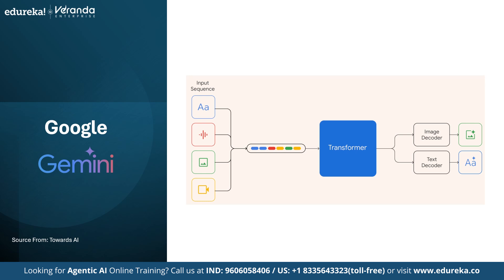The next multimodal model is Google Gemini. It's natively multimodal — trained from scratch on text, images, audio and video. Unlike CLIP, which aligns two encoders, Gemini has a single model handling all modalities using joint training with cross-attention. The AI takes in all types of inputs at once — written text, pictures, sound and even video — and uses one powerful transformer model to understand and combine all these inputs together. From that combined understanding, it can give any kind of output: a text answer, a generated image or even an audio response.